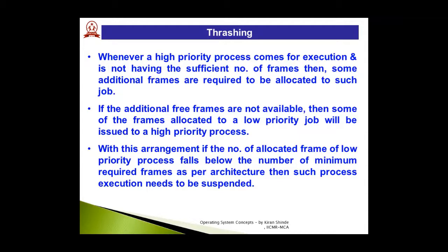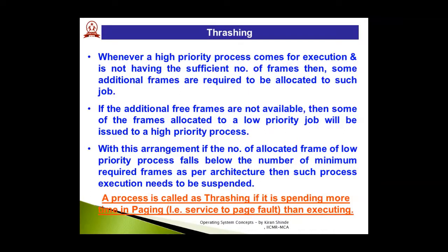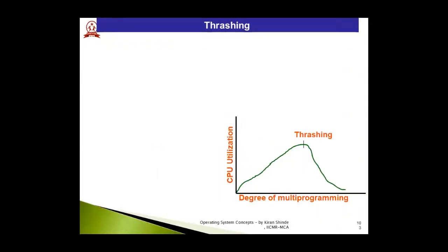For example, if a high-priority process requires 6 frames but only 4 are available, there is a deficiency of 2 frames. The system will look at frames allocated to low-priority processes and try to reassign them. However, if the frames taken from a low-priority process fall below its minimum requirement, that process is suspended. The side effect of this is called thrashing — when a process spends more time servicing page faults than actually executing.